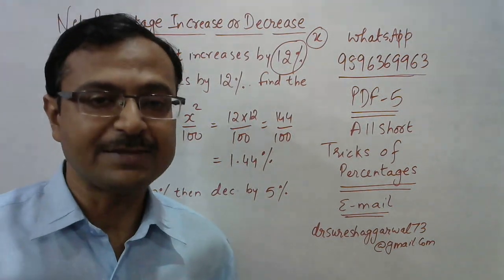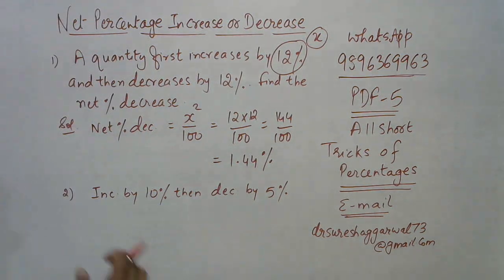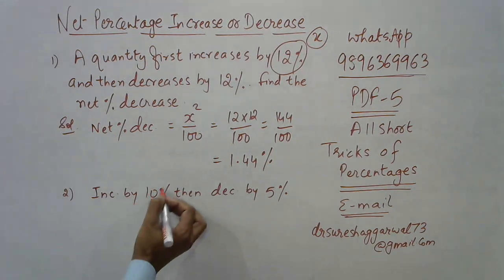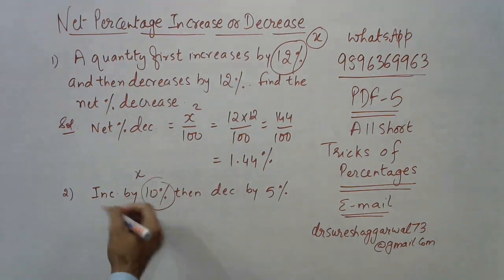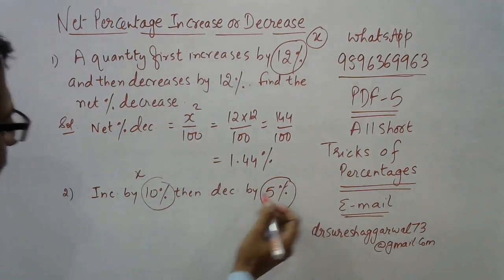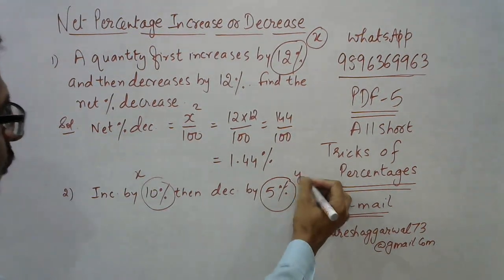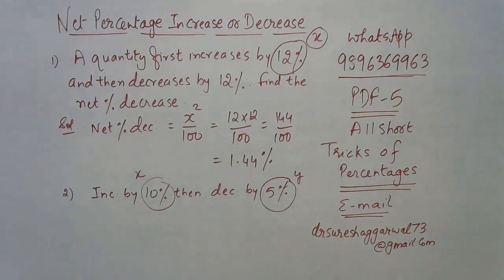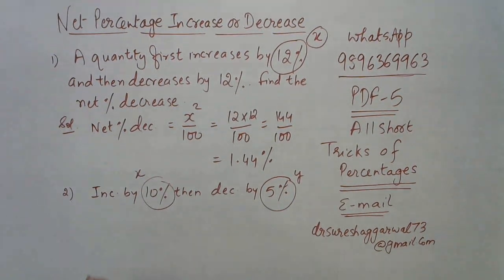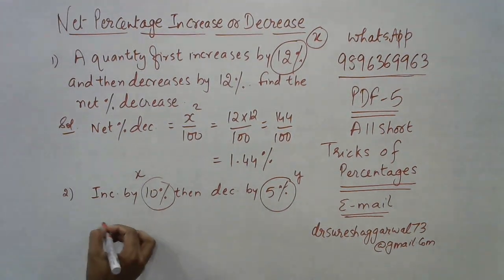Let's see another one. Here we are increasing the quantity by x, so let's assume this particular value is x, 10%, and this particular value by which it is decreased is y. So we have two values now, x and y.